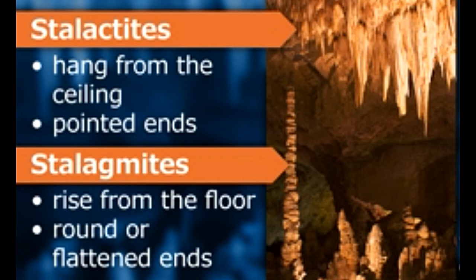Stalactites and stalagmites are natural formations found mostly in caves. To avoid confusion between the two terms, remember stalactite as the one which has a C in its spelling, and stalagmite as the one which has a G in its spelling. G stands for ground. Hence stalactites descend from the ceiling and stalagmites rise from the ground.